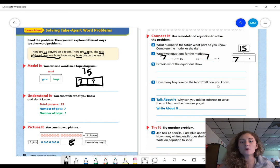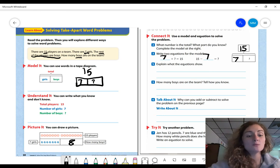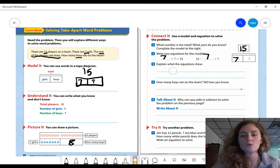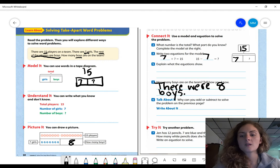So how many boys were on the team? There were eight boys. We counted on and we used a picture to compare our parts and whole there. There were eight boys.